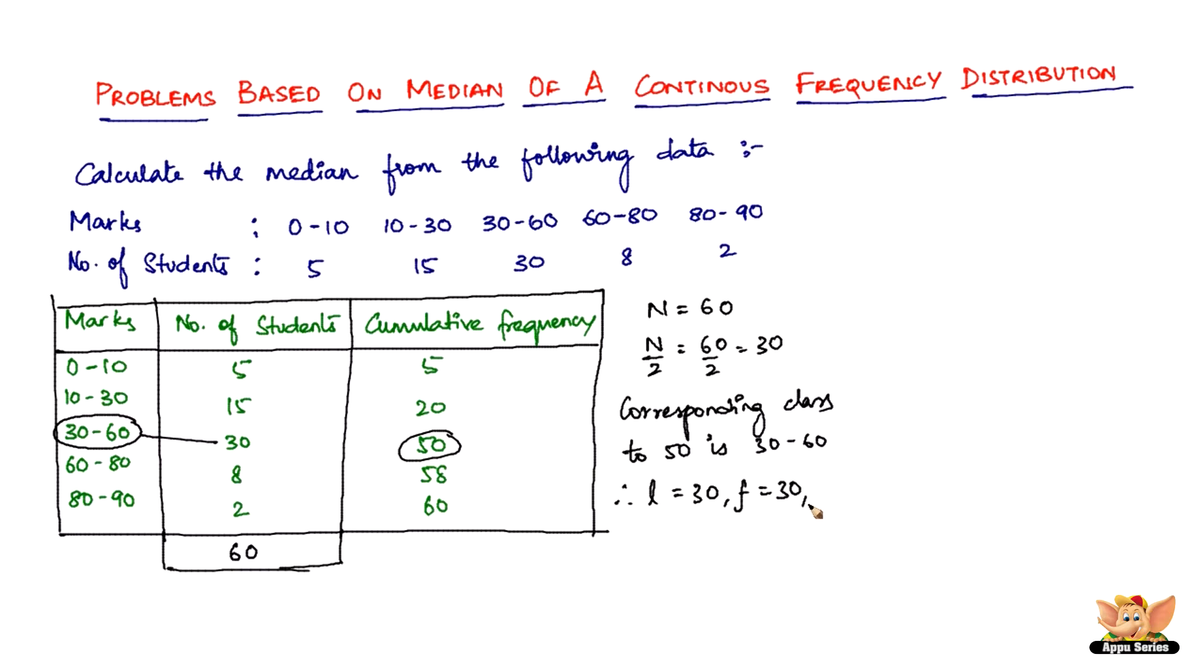And then you need to find capital F, which is the cumulative frequency corresponding to the class preceding to the class that we just found. So preceding to this is 10 to 30 and that is 20. So that's equal to 20. And then h, h in this class is exactly 30. So it's 60 minus 30, which is 30. So once you found all these data, you just have to substitute the formula here.